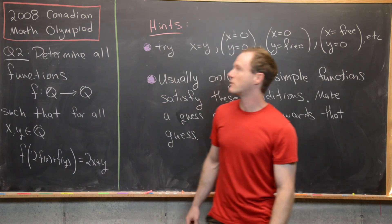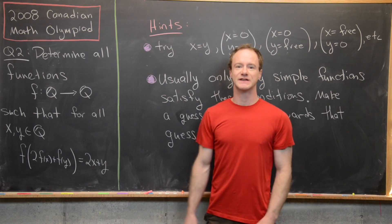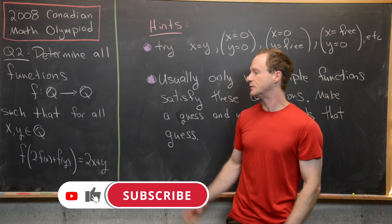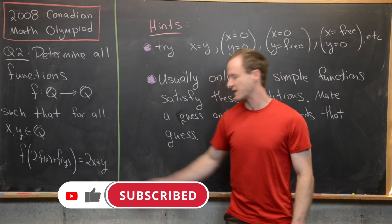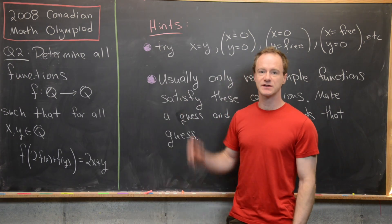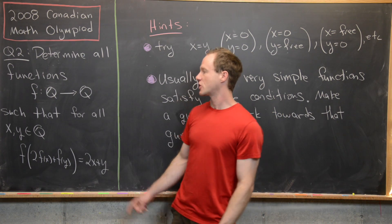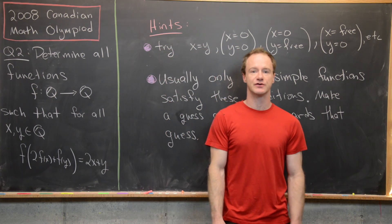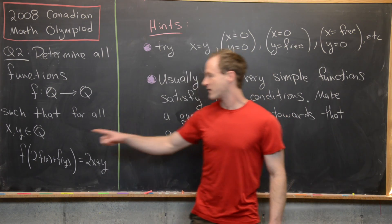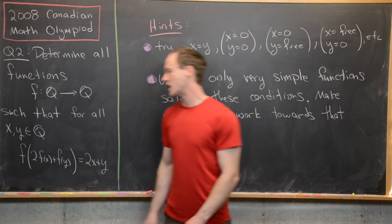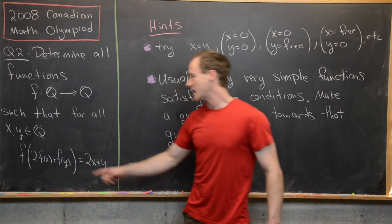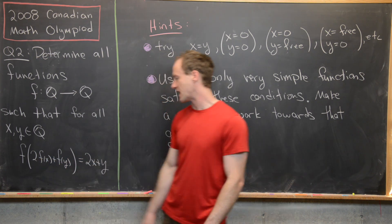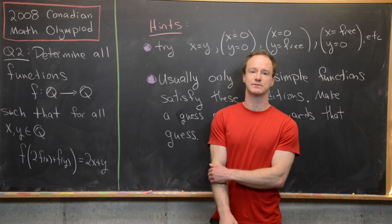Here we're going to look at a solution to a problem from the 2008 Canadian Mathematical Olympiad. This is question two, and it's a nice problem which deals with a functional equation. We want to determine all functions whose domain are the rational numbers and range are the rational numbers, such that for all inputs x and y from the rational numbers, we have f evaluated at two times f of x plus f of y is equal to 2x plus y.